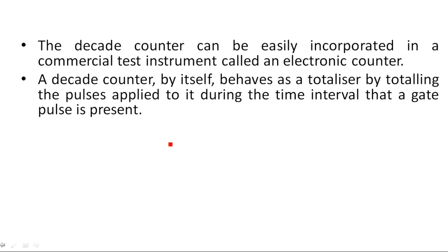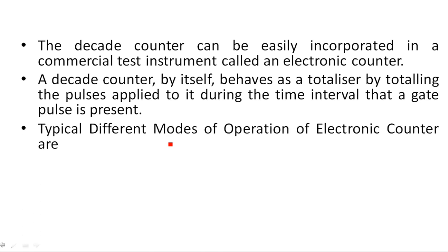The totalizing happens during the time interval that a gate pulse is present. Through one input we are giving the number of pulses, and our aim is to count those pulses. A decade counter counts the number of pulses, and once the pulse count reaches 10, an overflow occurs.